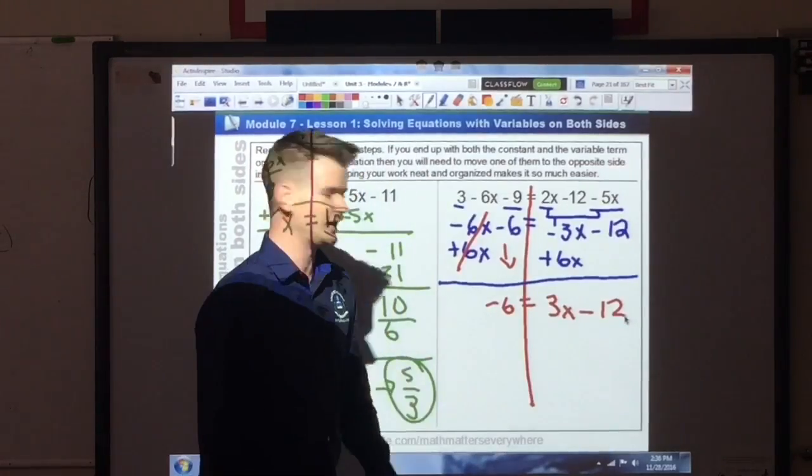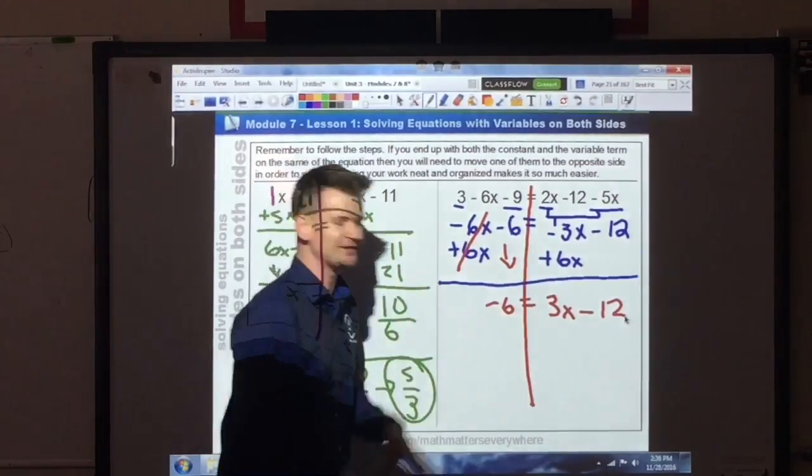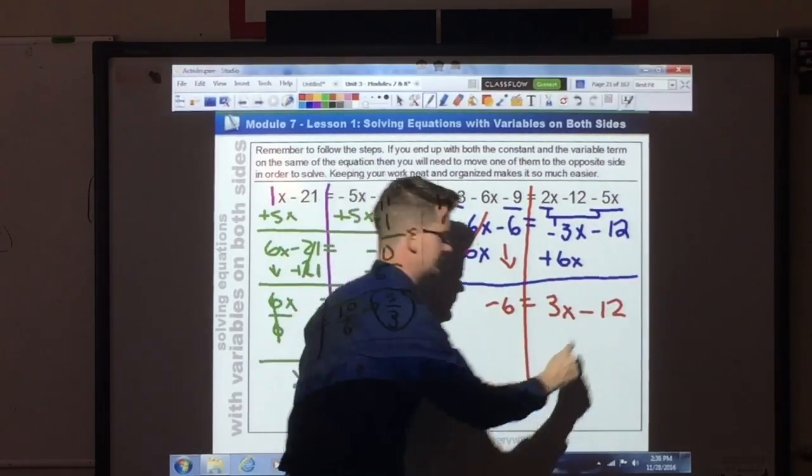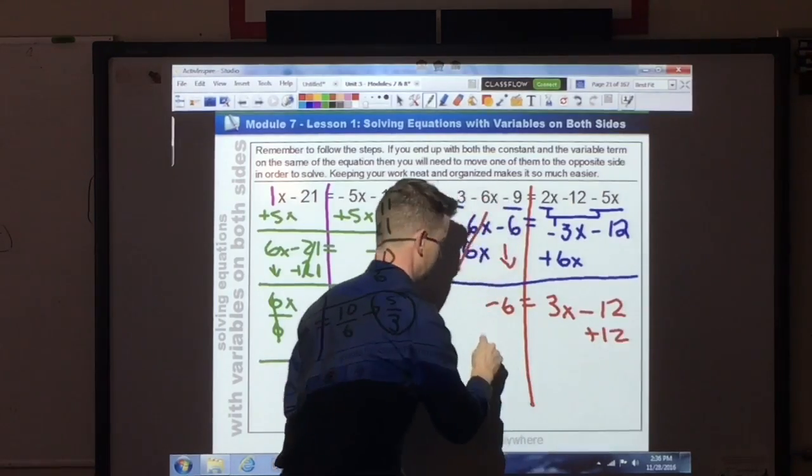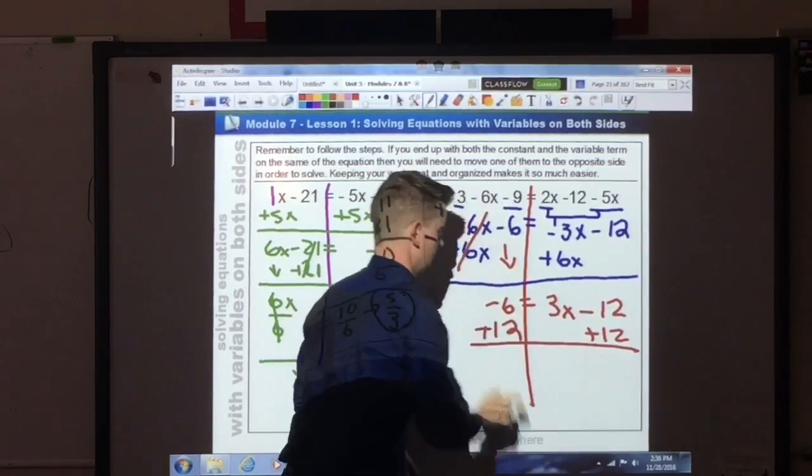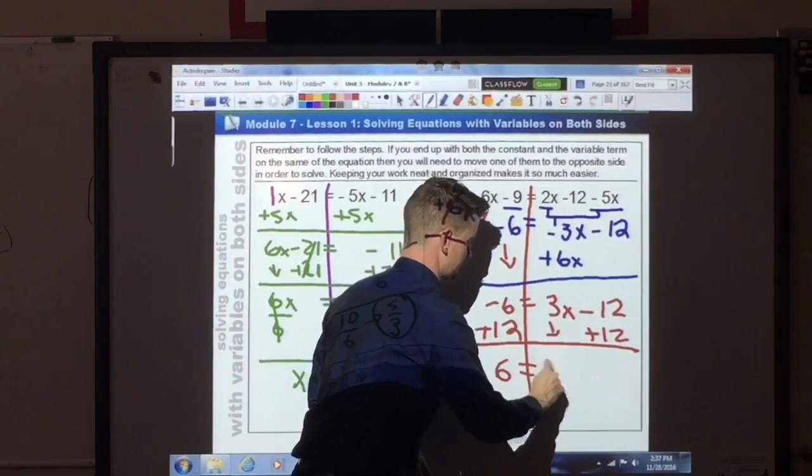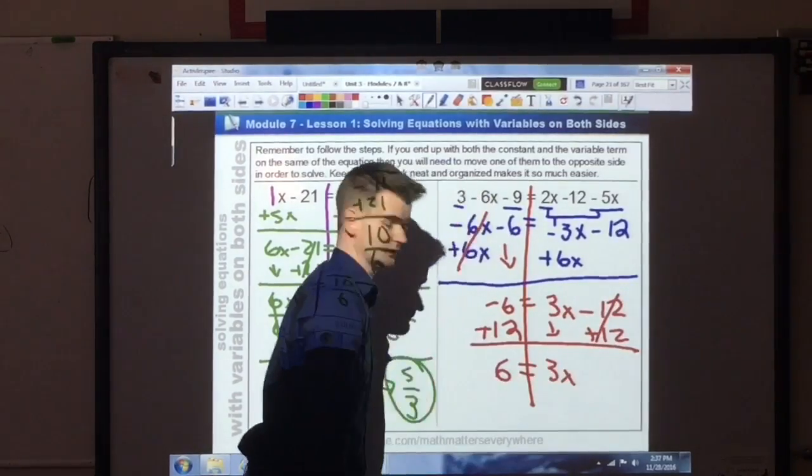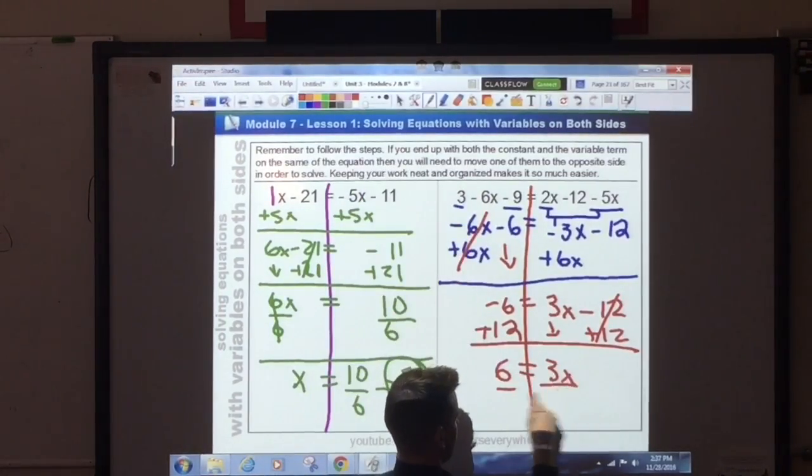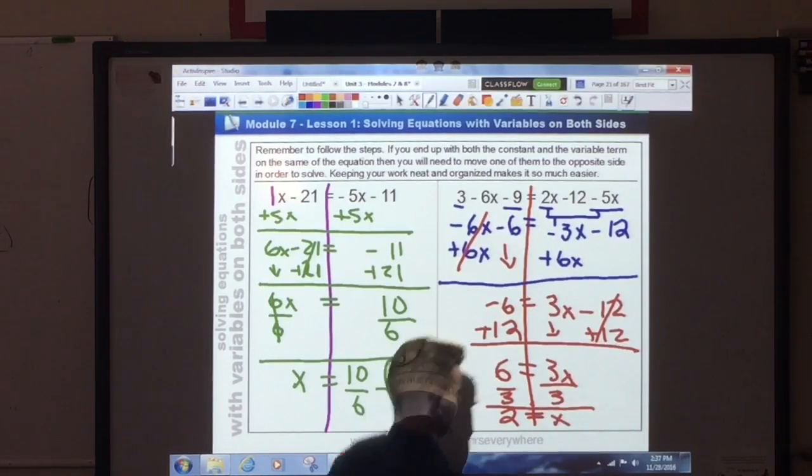Guess what? Two-step equation time. Variable term must be isolated. So we get rid of that constant. Plus 12 plus 12. Negative 6 plus 12 gives me 6. Equals. I bring down the 3x. Those cancel. Alright, alright. I divide both sides by 3. And I get 2 is equal to x.